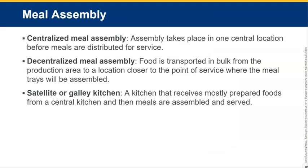Centralized meal assembly is when assembly takes place in one central location before meals are distributed. For a small hospital with maybe 20 beds, there's one kitchen serving the entire hospital. Decentralized meal assembly is when food is transported in bulk from the production area to a location closer to the point of service where meal trays are assembled — essentially a larger main kitchen with a secondary kitchen closer to that floor. The satellite or galley kitchen receives mostly prepared foods from a central kitchen; meals are then assembled and served there.